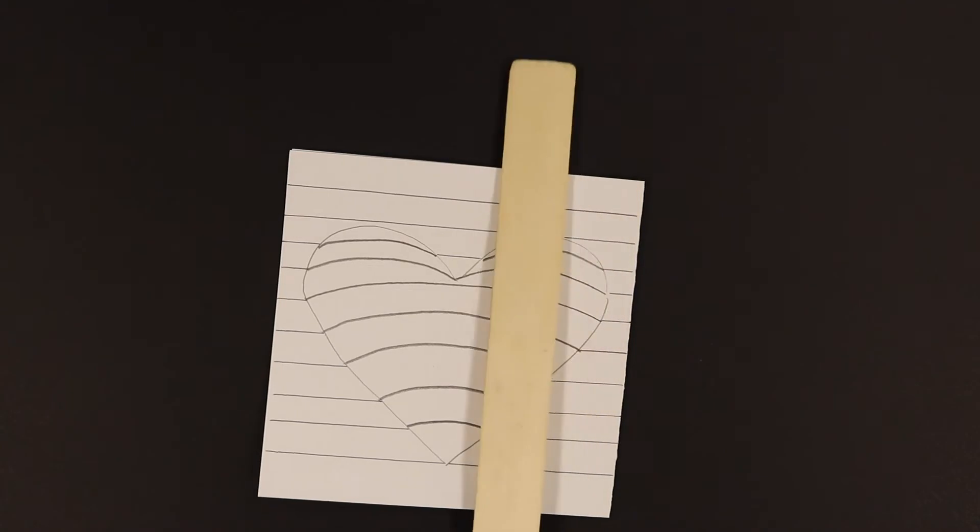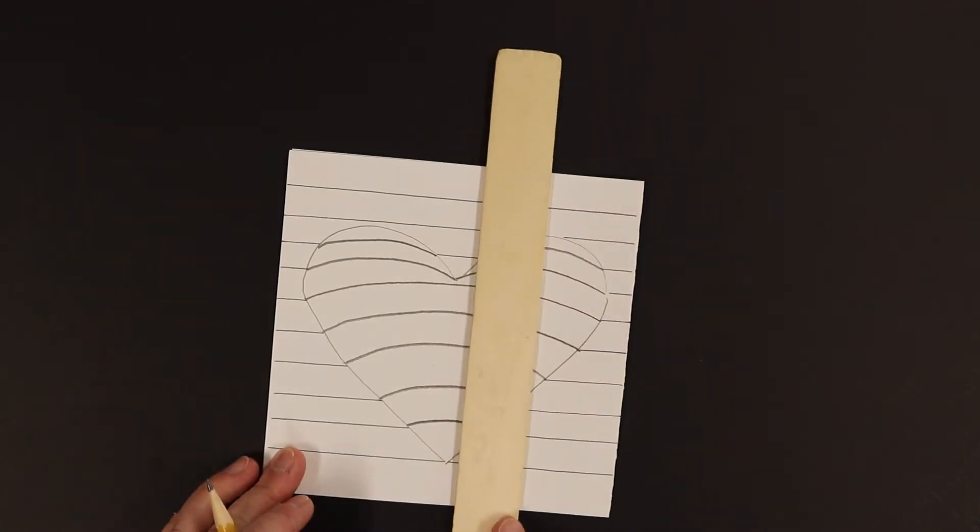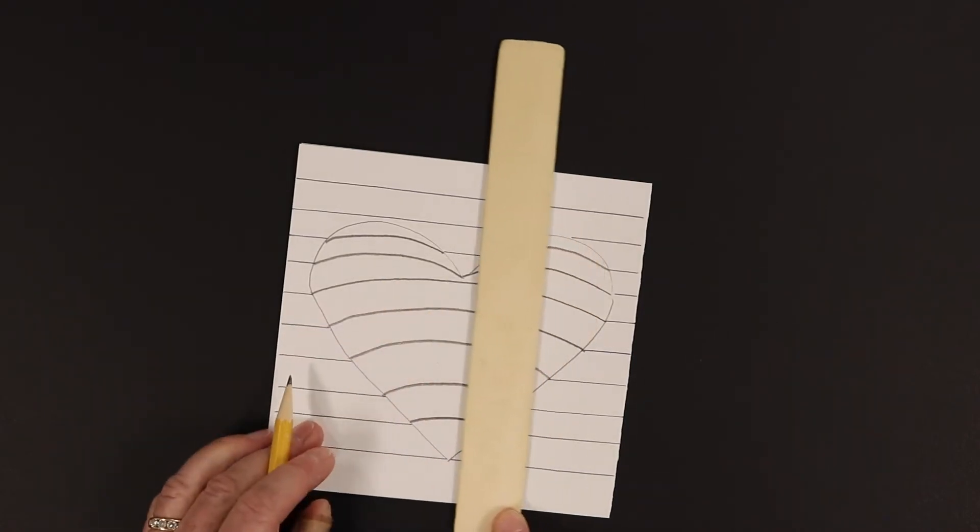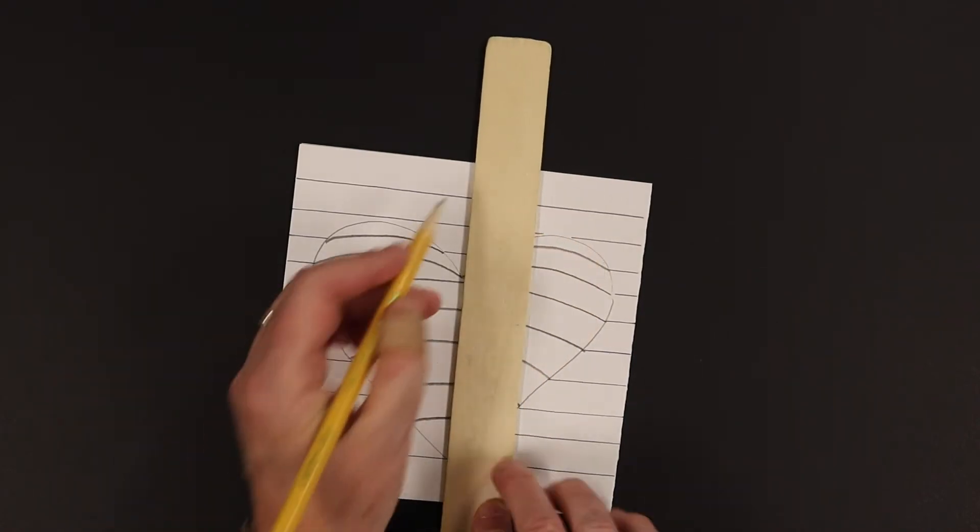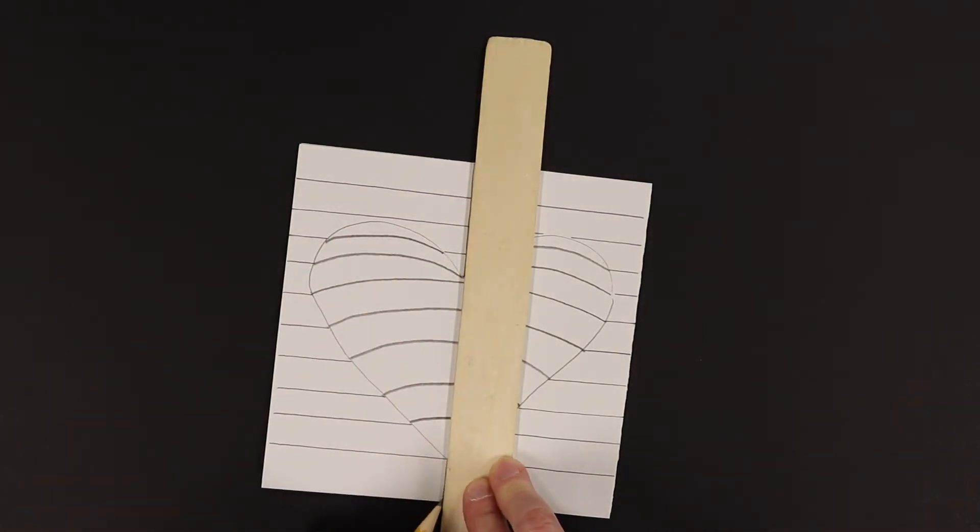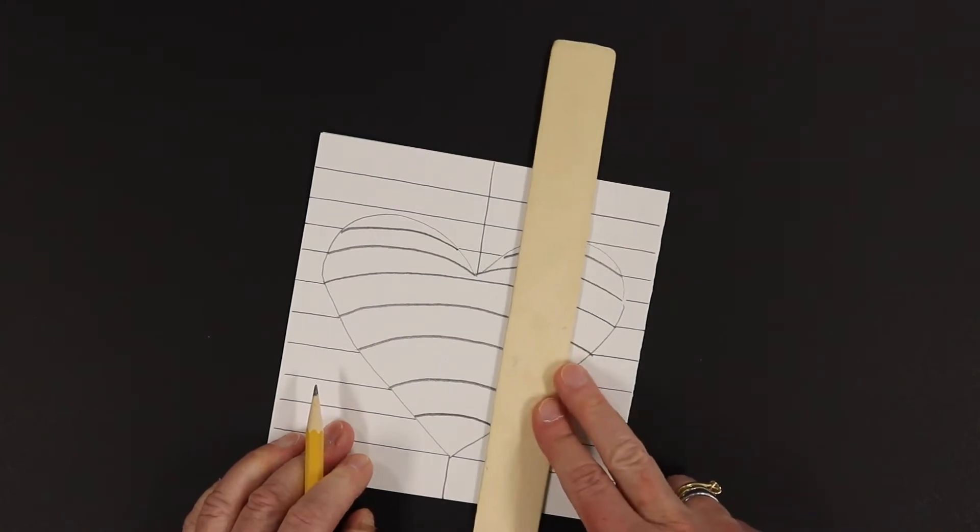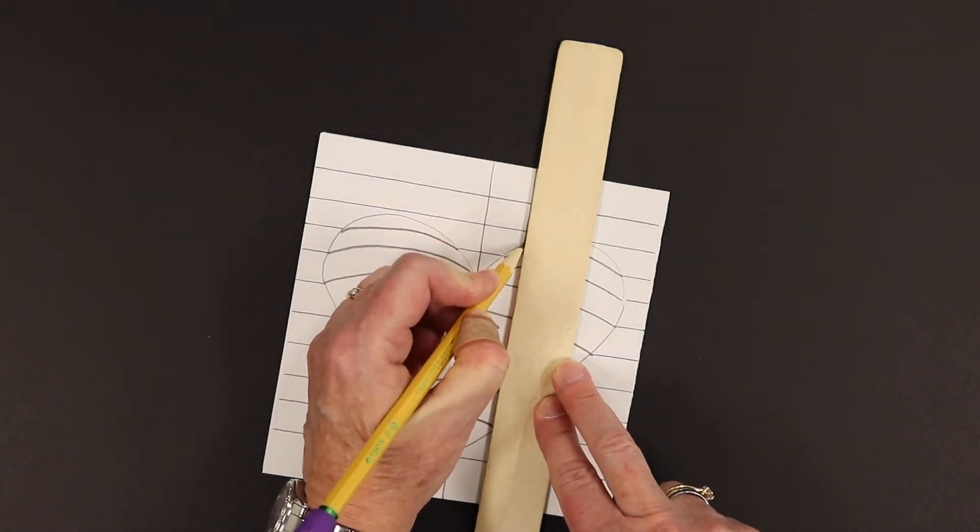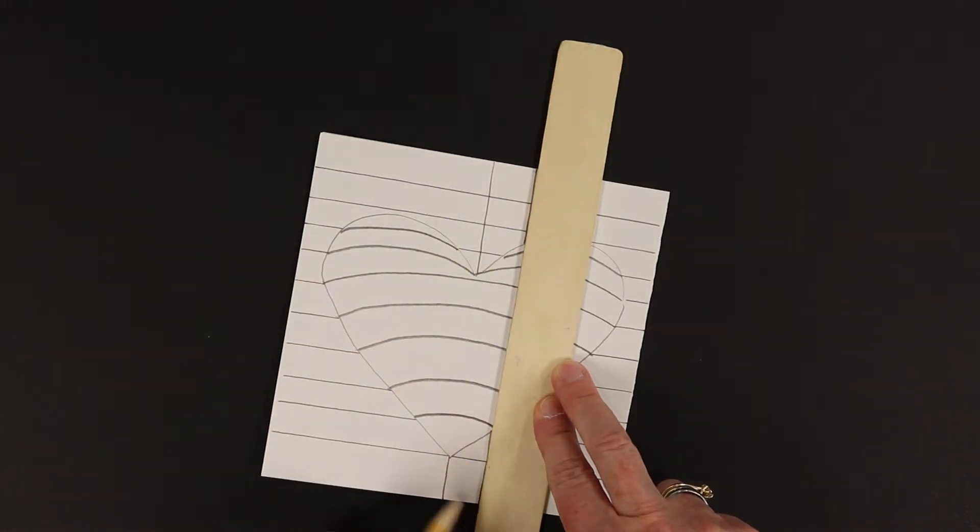Alright, now it's time to do our vertical lines, since we did our horizontal. And you're going to start in the middle of your heart, drawing from that point to this point. And again, you're going to skip over the heart. Alright, try and do evenly spaced again, stopping at the heart and skipping over.